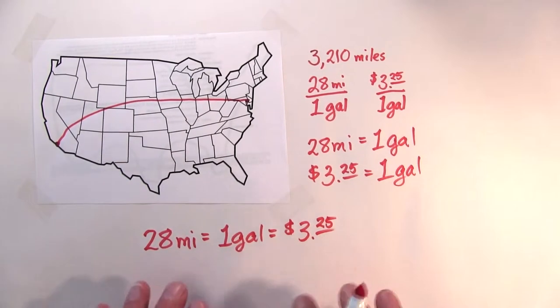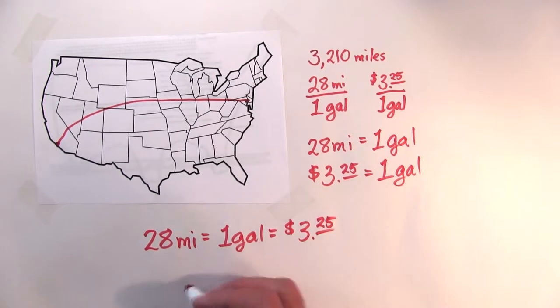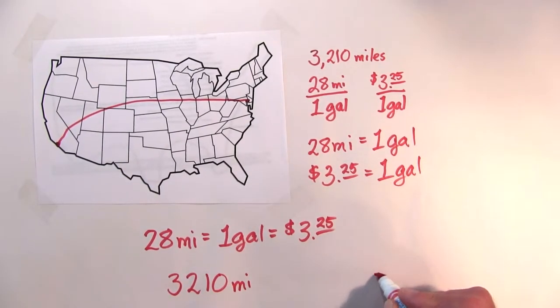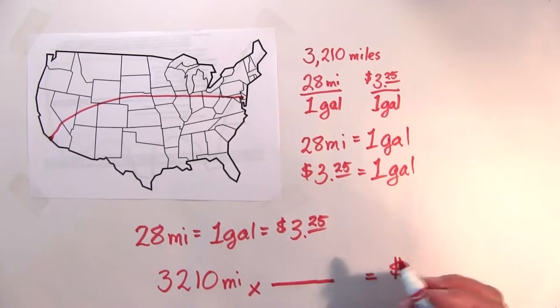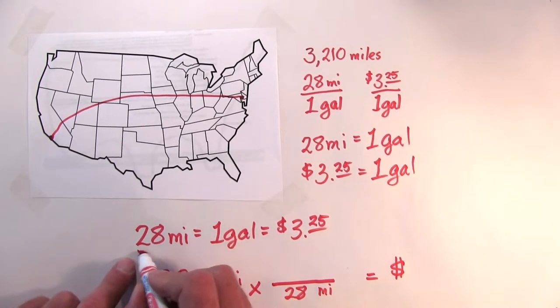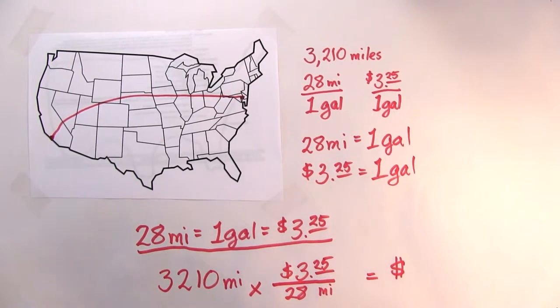Now you'll notice that gallons are the same, so what I can do is create one long equation: 28 miles equals one gallon of gas equals $3.25. All of these things, even though they have different units, are equal to each other. So now the question is, how much is it going to cost me to go 3,210 miles and change that into dollars? Well, I've got to multiply that by some factor that will convert miles into dollars.